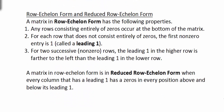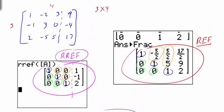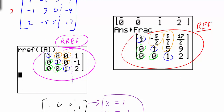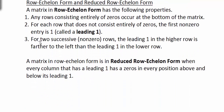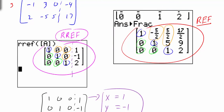A matrix in row echelon form has the following properties: any rows consisting entirely of zeros occur at the bottom of the matrix; for each row that does not consist entirely of zeros, the first nonzero entry is called a leading 1; and for two successive nonzero rows, the leading 1 in the higher row is farther to the left than the leading 1 in the lower row — meaning as you go down, the leading 1 shifts to the right.